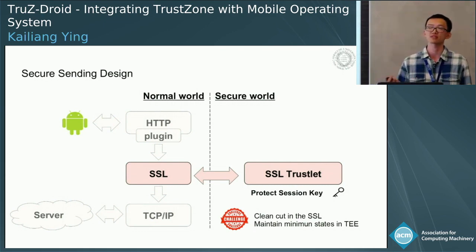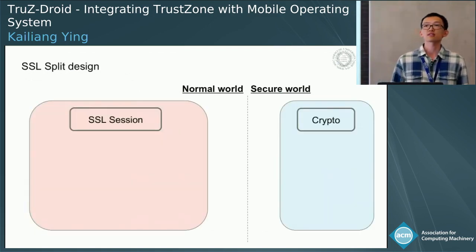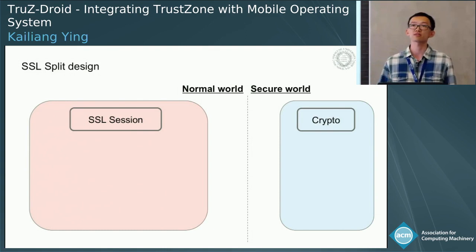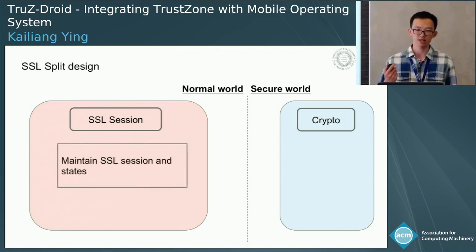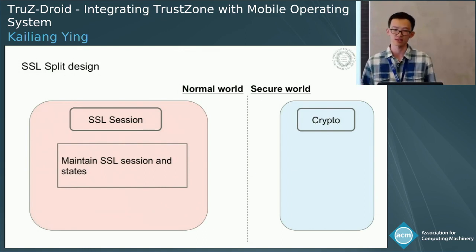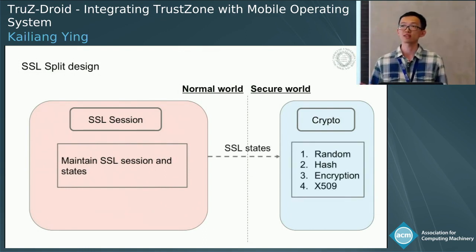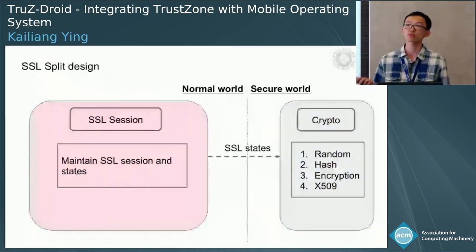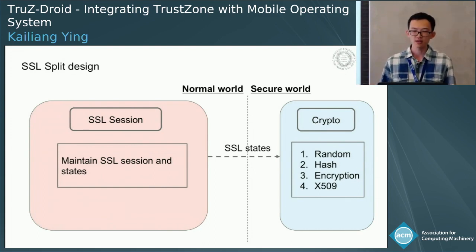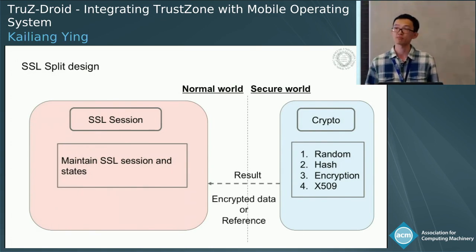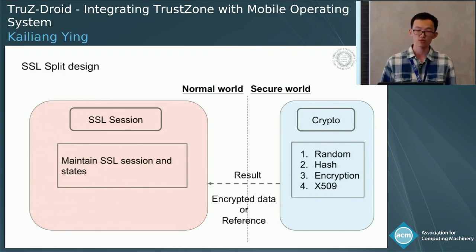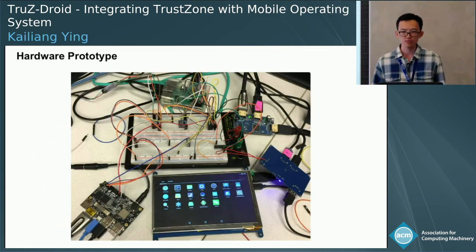We further divided SSL into two parts: SSL session and crypto. The normal world maintains the SSL session with the server to maintain the connection and store the majority of SSL state. When SSL needs to do crypto, it sends the essential SSL state to the secure world to finish all the crypto logic, then returns the result back. The result could be either encrypted data — which the normal world cannot read — or a reference to data we want to keep inside TrustZone.